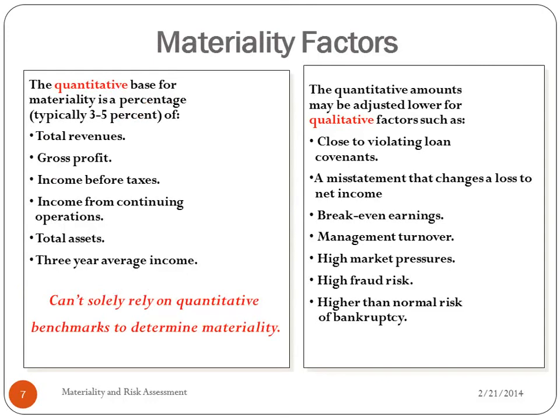There is a quantitative base for materiality factors — usually three to five percent. A company with great internal controls probably uses a five percent base, whereas a firm with less restrictive or questionable internal controls would use three percent. The base is applied to: total revenues, gross profit, income before taxes, income from continuing operations, total assets, and three-year average income.